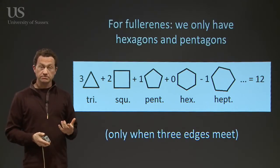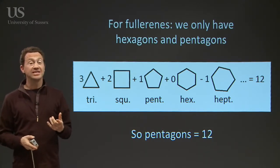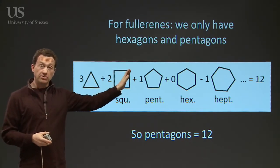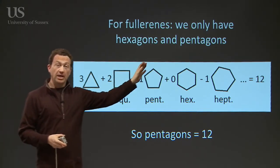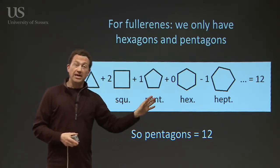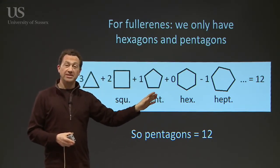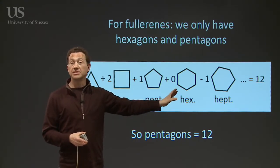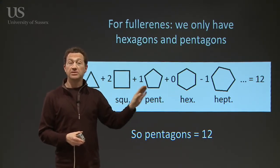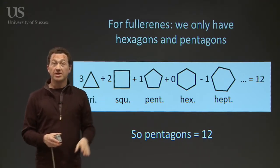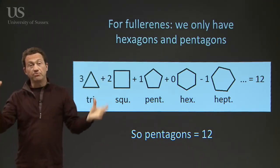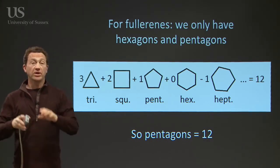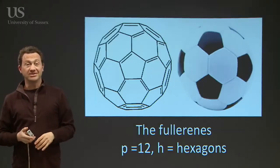Now for the football structure, which only has pentagons and hexagons — no triangles, no squares, no heptagons — you get one times the number of pentagons plus naught times the number of hexagons equals twelve. The hexagon term drops out, so you get the number of pentagons equals twelve. So you can use Euler's law to prove that you have to have exactly twelve pentagons in the structure if you've only got pentagons and hexagons.